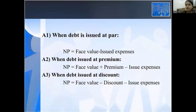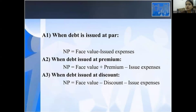When debt is issued at par, NP equals face value minus issue expenses. When debt is issued at a premium, NP equals face value plus premium minus issue expenses. When the debt is issued at a discount, NP equals face value minus discount minus issue expenses.